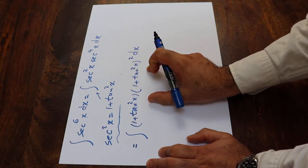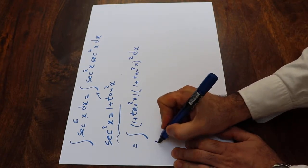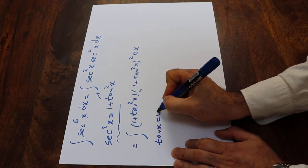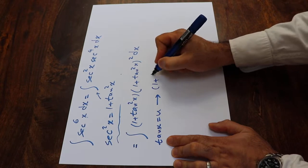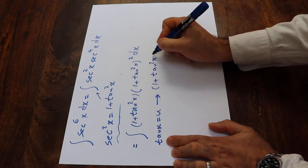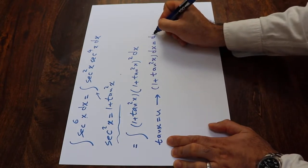Here, you can solve this integral using the substitution rule. If you define tan x as u, if you take the derivative from each side of this equation, you can conclude that 1 plus tan²x dx will be equal to du.